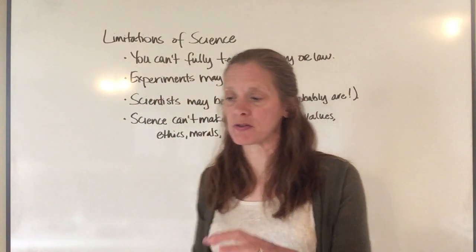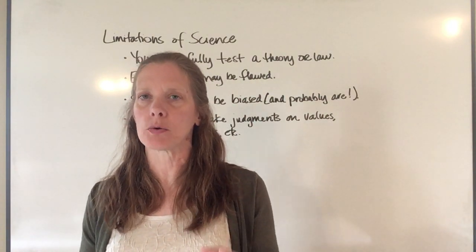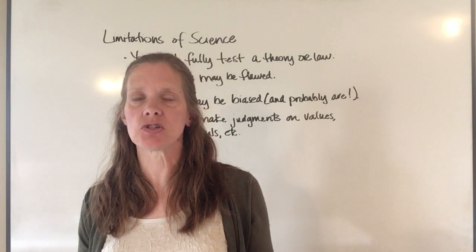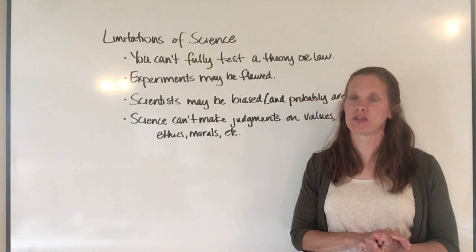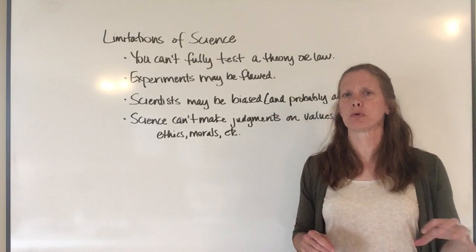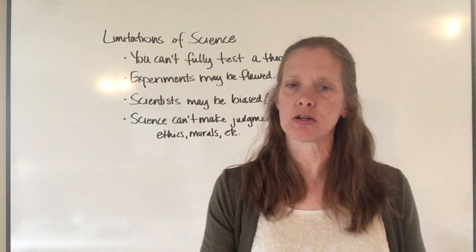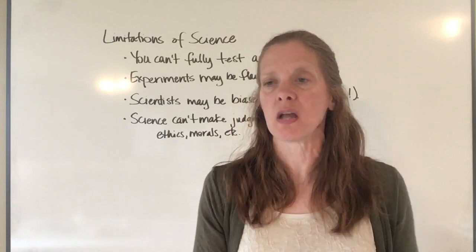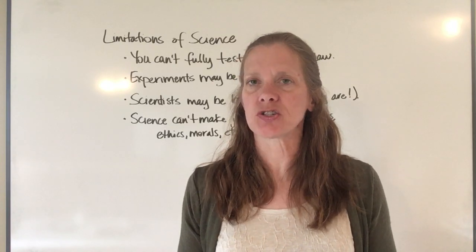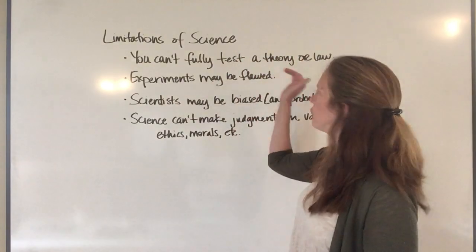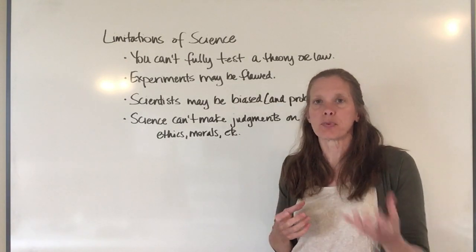On to today's topic: the limitations of science. The first limitation is that you can't fully test a theory or a law. There's always another factor to test, maybe you didn't test it in a particular environment. There's always something we haven't been able to test yet, so we can't ever fully test a theory or a law — meaning we can't ever completely prove anything.